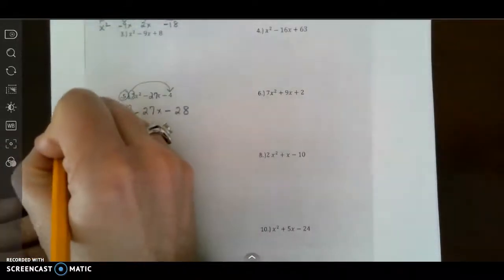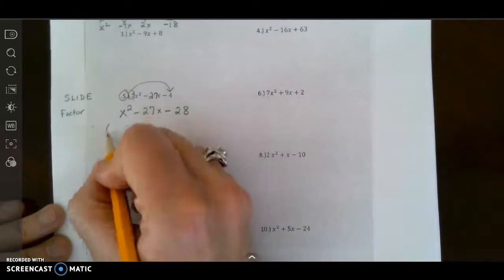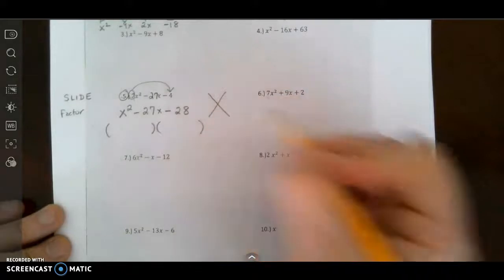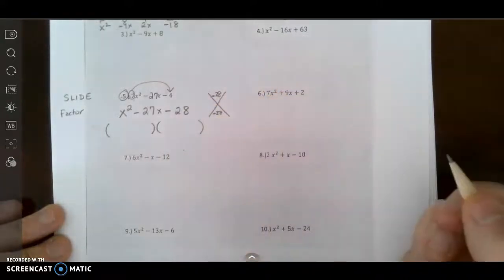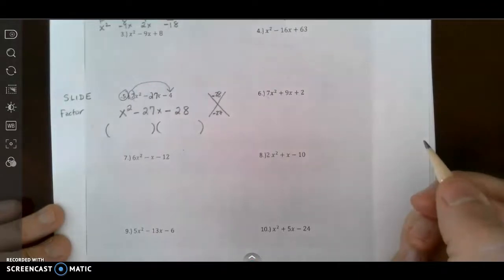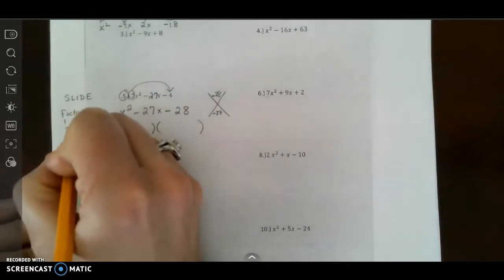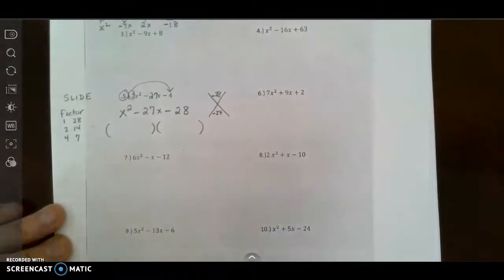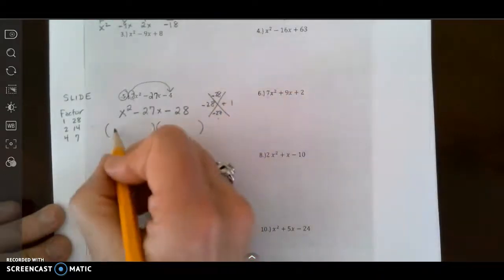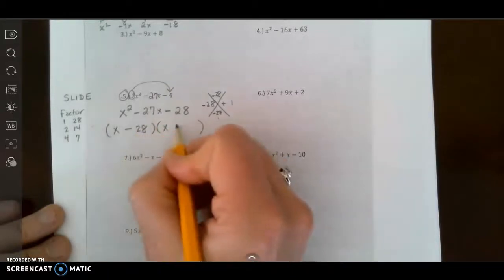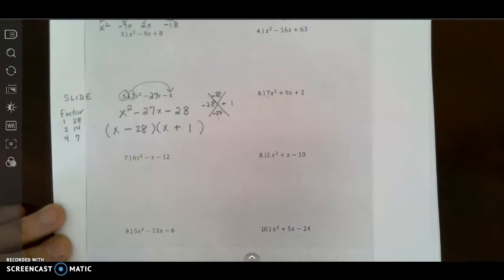Now I need to factor. And this is where we're going to have to factor the same way we did on numbers 1 and 2. Negative 28 is my product. Negative 27 is my sum. So I'm going to think about my factors of 28. I have 1 and 28, 2 and 14, 4 and 7. And is there any way to get negative 27 from any of these factors? I'm thinking negative 28 and positive 1. So my factors are going to be minus 28 and plus 1. Now of course I can't just leave it like this because this is a different equation than this. So now I have to do the divide step.